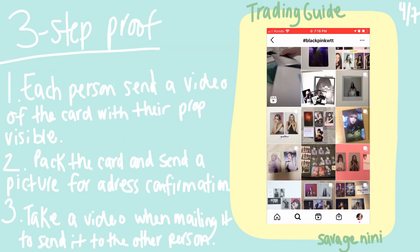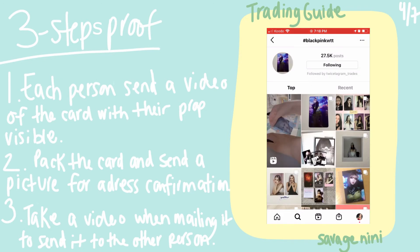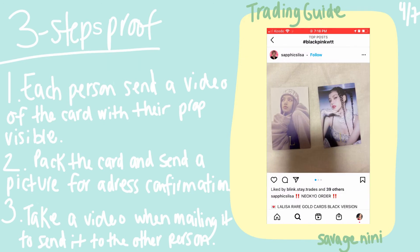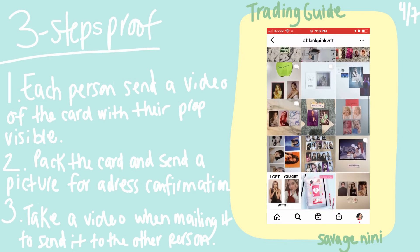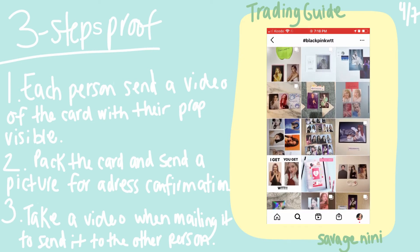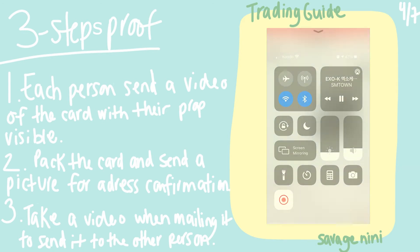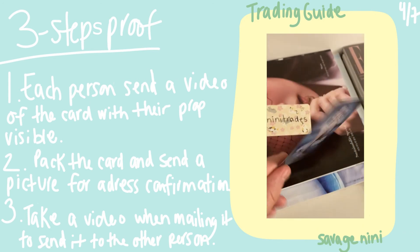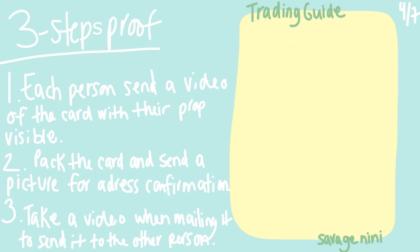Number one: both people should send each other a video of the cards. Preferably you have to see both sides, and you can also send one with the flash on and one with the flash off so you can see if there is damage on the card. Your prop also needs to be visible so you know the video isn't stolen from someone else.